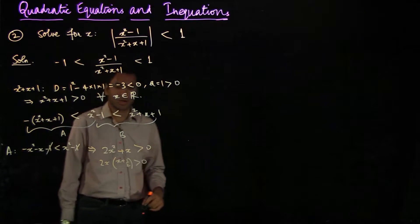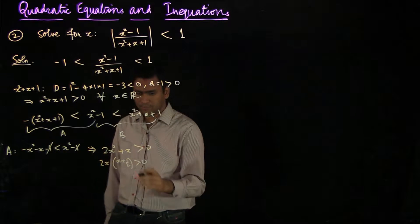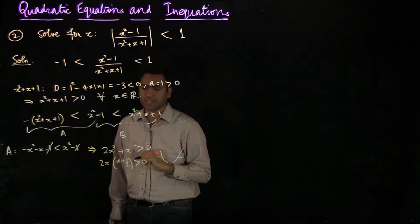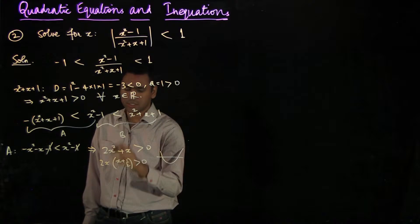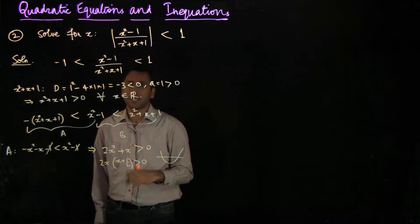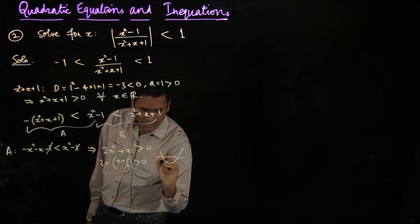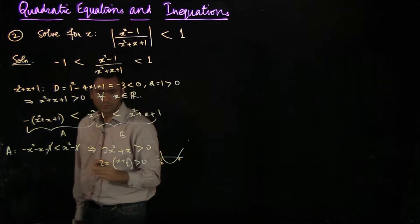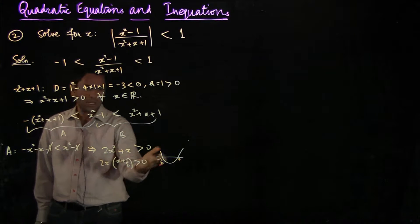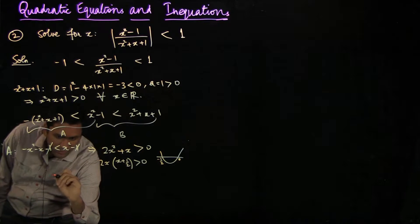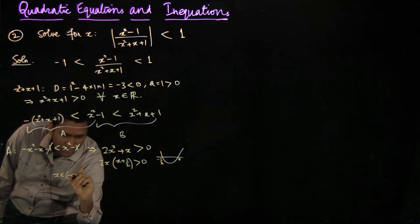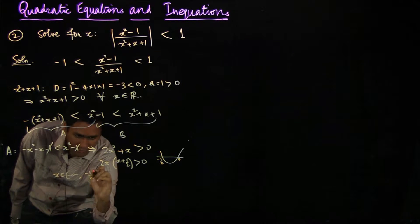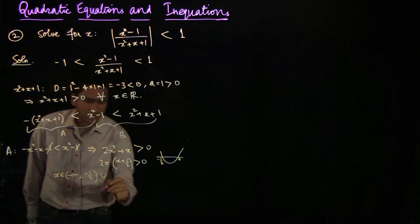The left side is a quadratic polynomial, and if you were to plot this — since it has two roots and is opening upwards because the coefficient of x squared is positive — the first root is minus half and the second root is 0. So, factoring gives 2 times x times x plus half is greater than 0. For this quantity to be greater than 0, x belongs to minus infinity to minus half, union 0 to infinity.